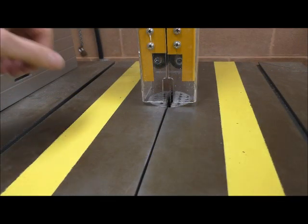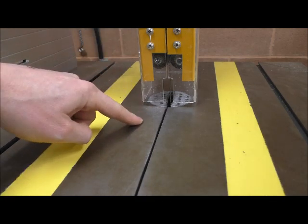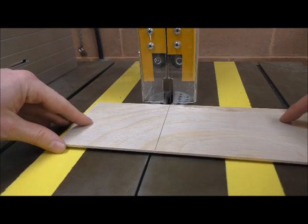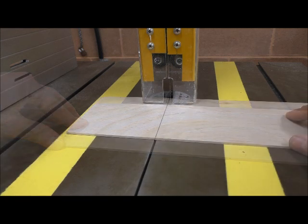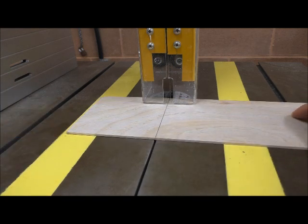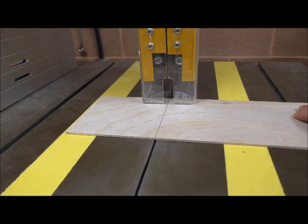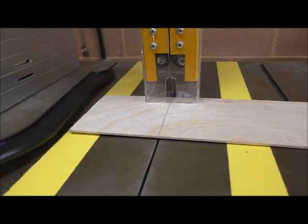We first need to identify the line of cut provided on the table. Using that, we can line up our work and ensure that we are in line with the blade. Before we turn on the machine, ensure that our hands are outside of the yellow line and we have access to a push stick if required.